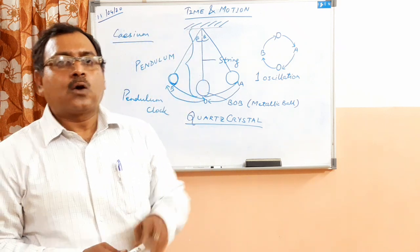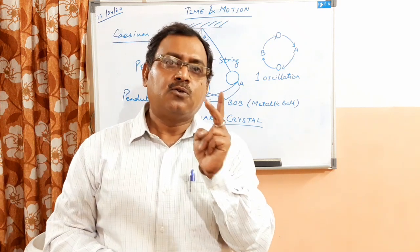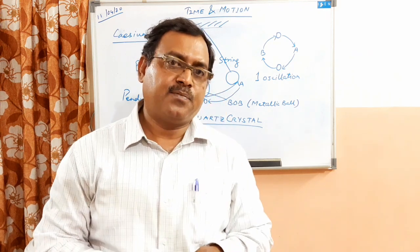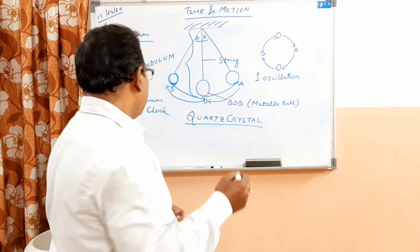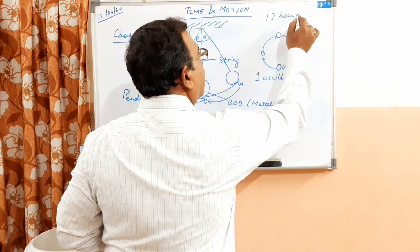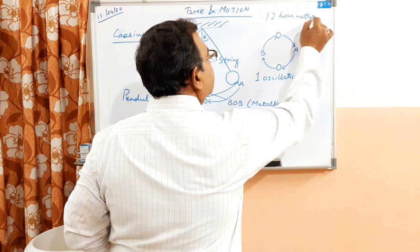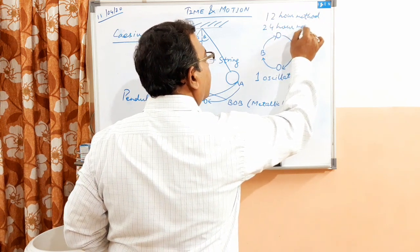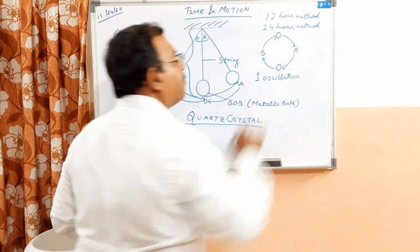Now clocks use two types of methods for measuring time. One is called as 12-hour method, another is called as 24-hour method.